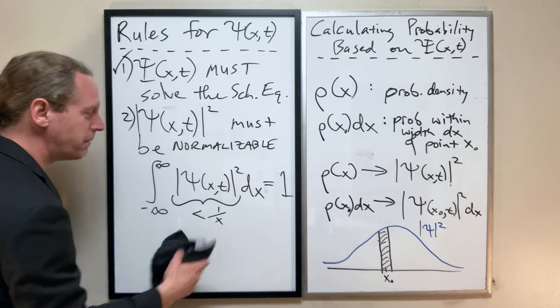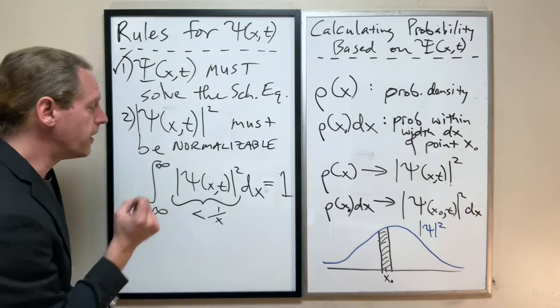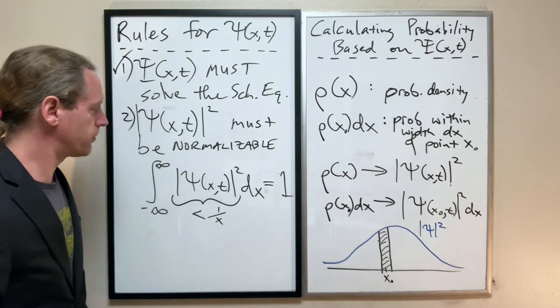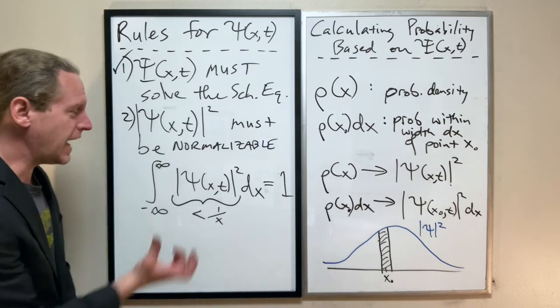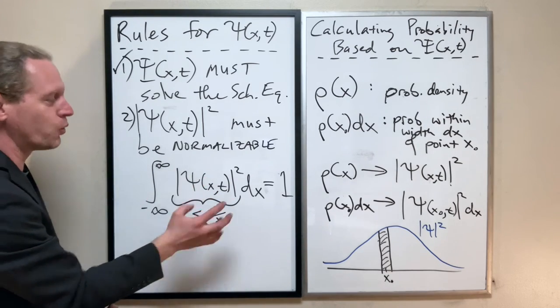Now the reason why I say that though is that basically psi squared has to approach that, but psi doesn't necessarily. That we can now, the limit for psi itself is not necessarily going to be one over x.